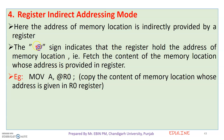In register indirect addressing mode, if you have the name of the register, the register holds the address of a memory location. You can then access the content at that memory location. For example: MOV A, @R0 — this copies the content of the memory location whose address is given in the R0 register.